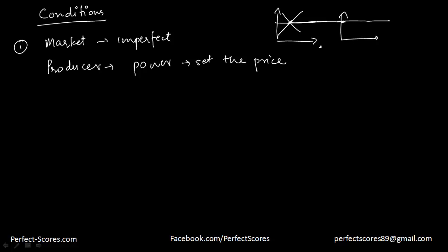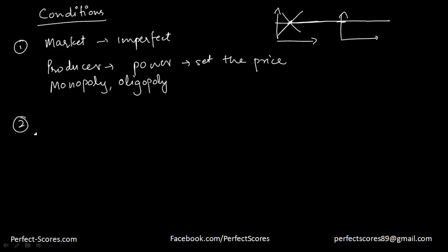In perfect competition, the price is determined by the demand and supply of the industry, so the firm has nothing to do with the price. When markets are imperfect — for example, monopoly or oligopoly — then price discrimination is possible.